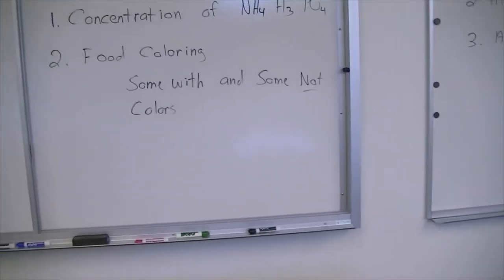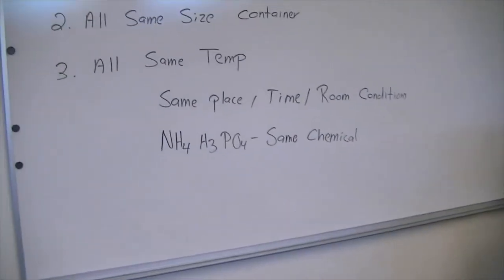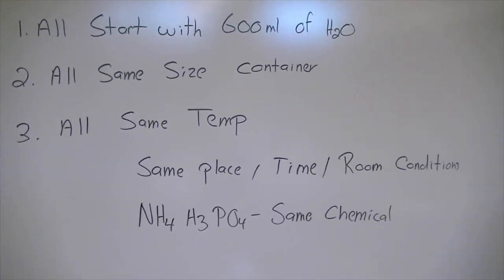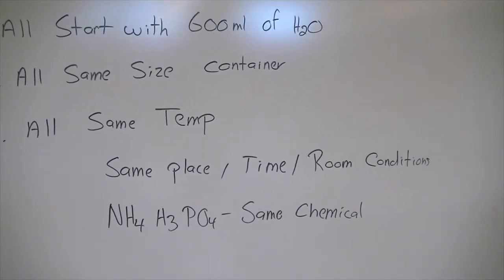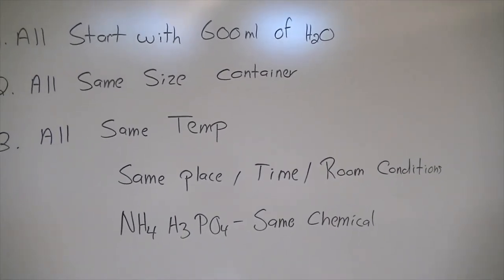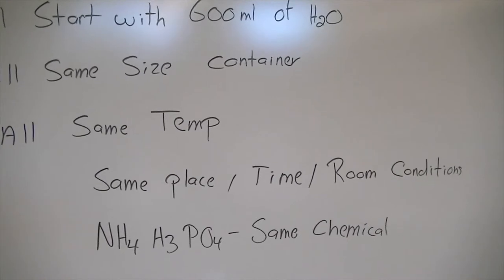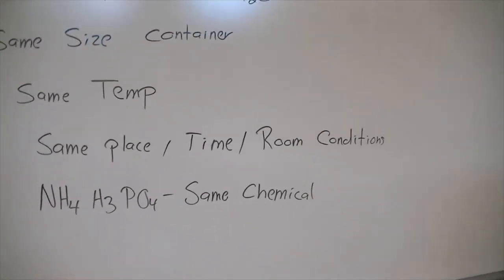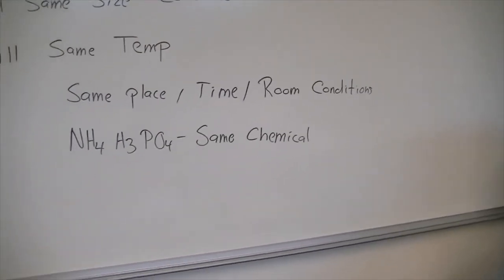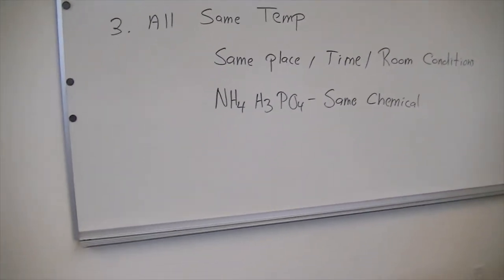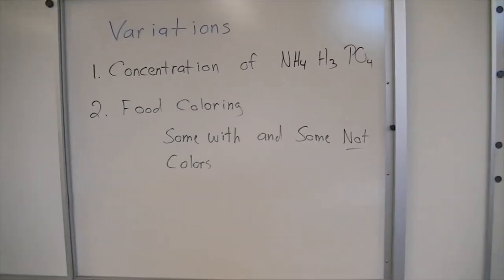I did modify this a little bit — the two blues have a lot of food coloring in the very dark blue. To restate: we all start out with the same constant volume of water at 600 milliliters, all in the same container, same temperature, same time, same place. The only things that varied were food coloring or no food coloring, the amount of food coloring, and the concentrations of ammonium phosphate.